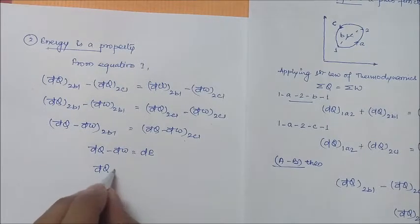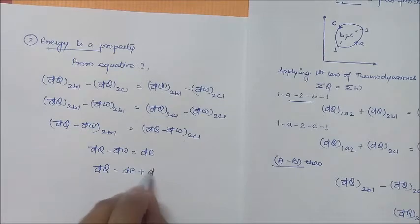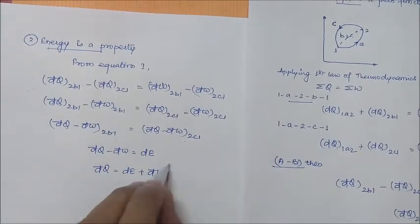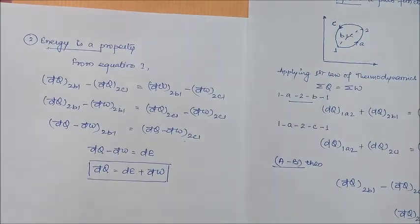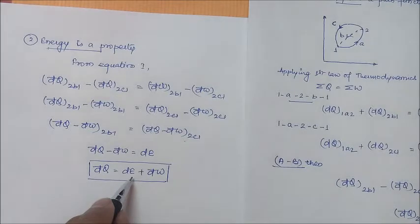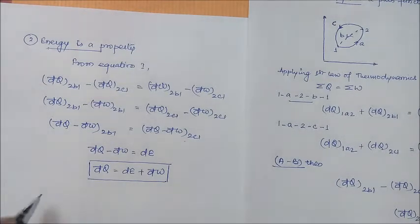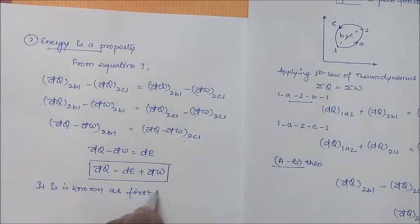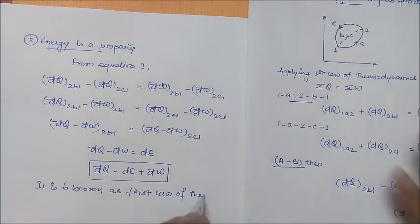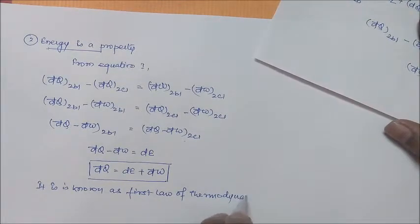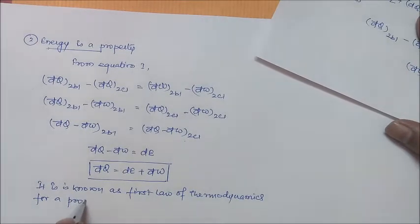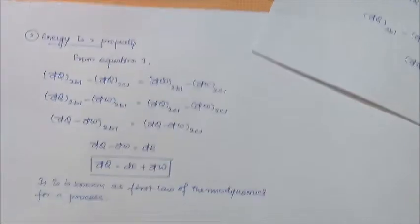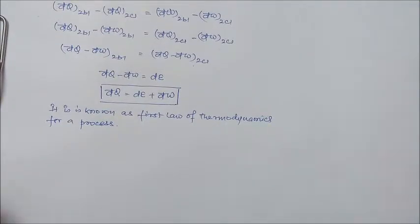From this we can write: δQ = dE + δW. This is our equation for heat transfer in terms of energy and work done, and it is known as the first law of thermodynamics for a process.